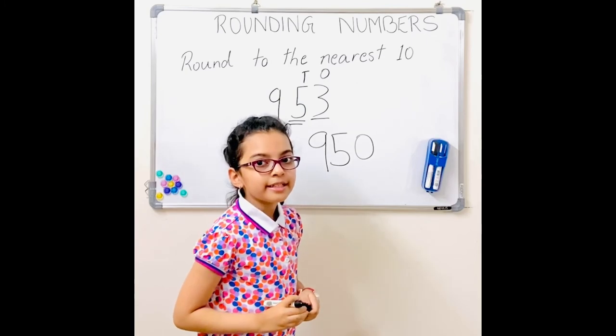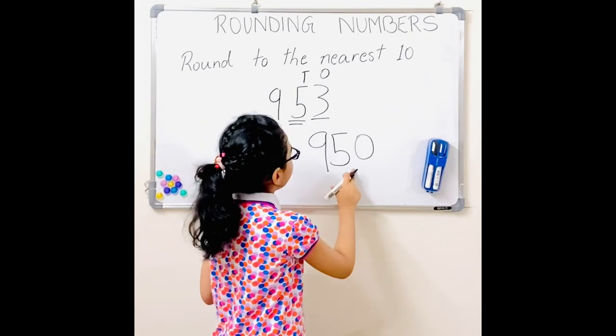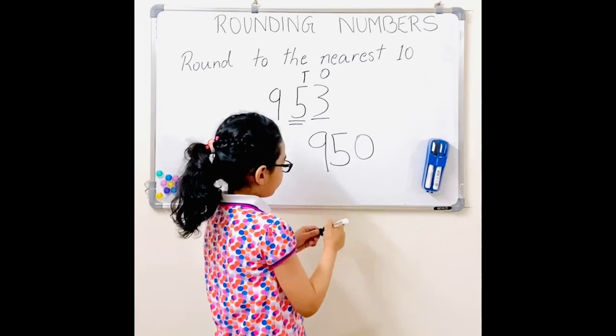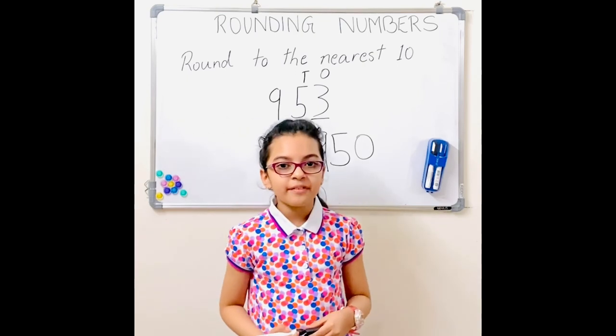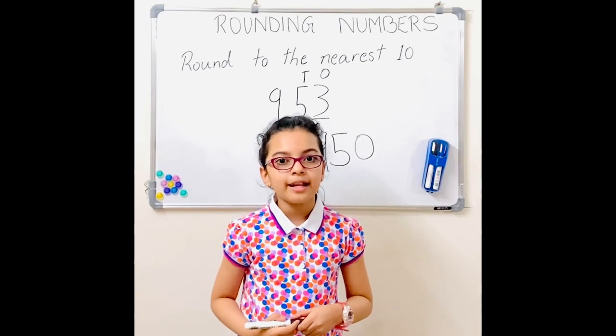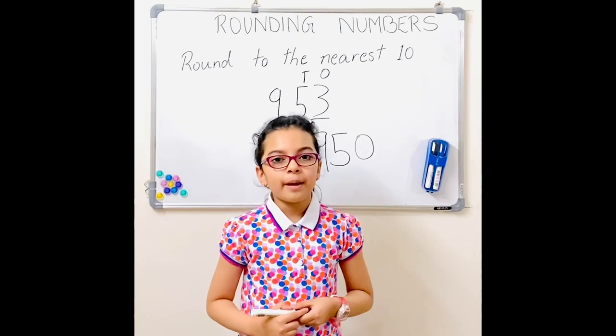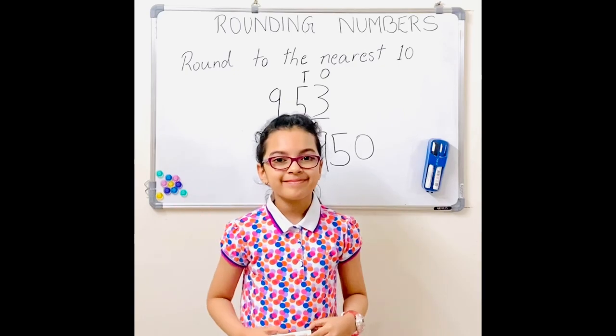953 rounded to the nearest ten is 950. I hope you enjoyed my video on rounding numbers everyone. Please remember my tips and tricks. Bye! Thank you.